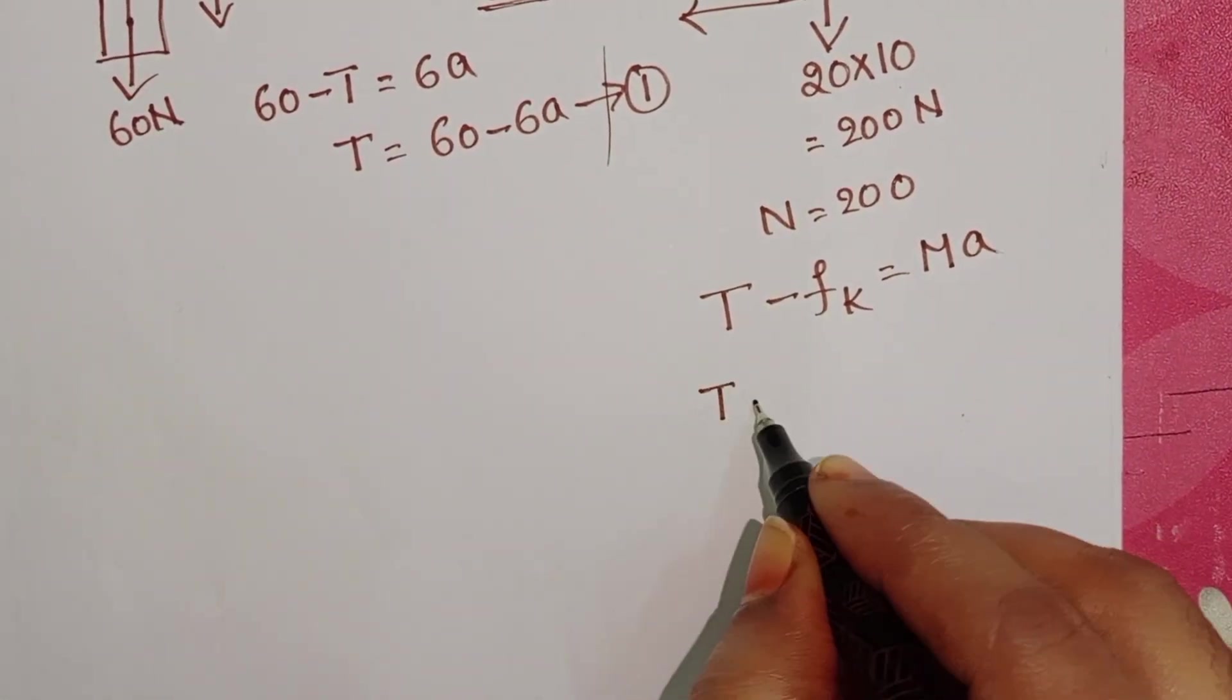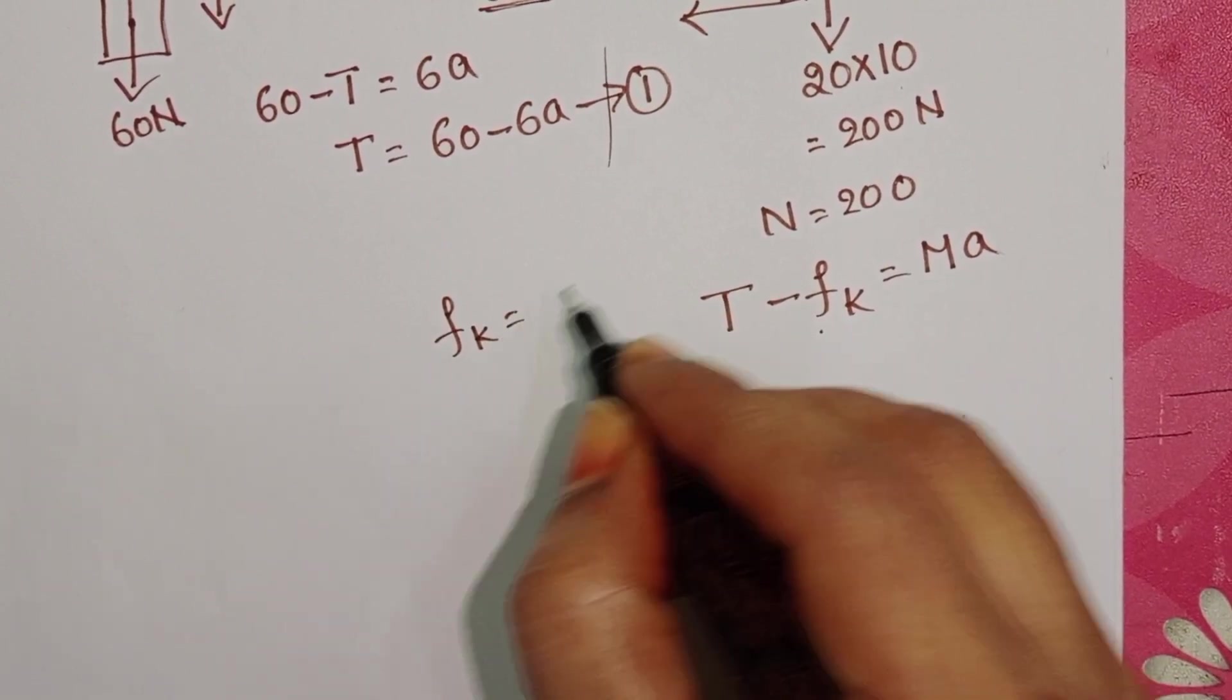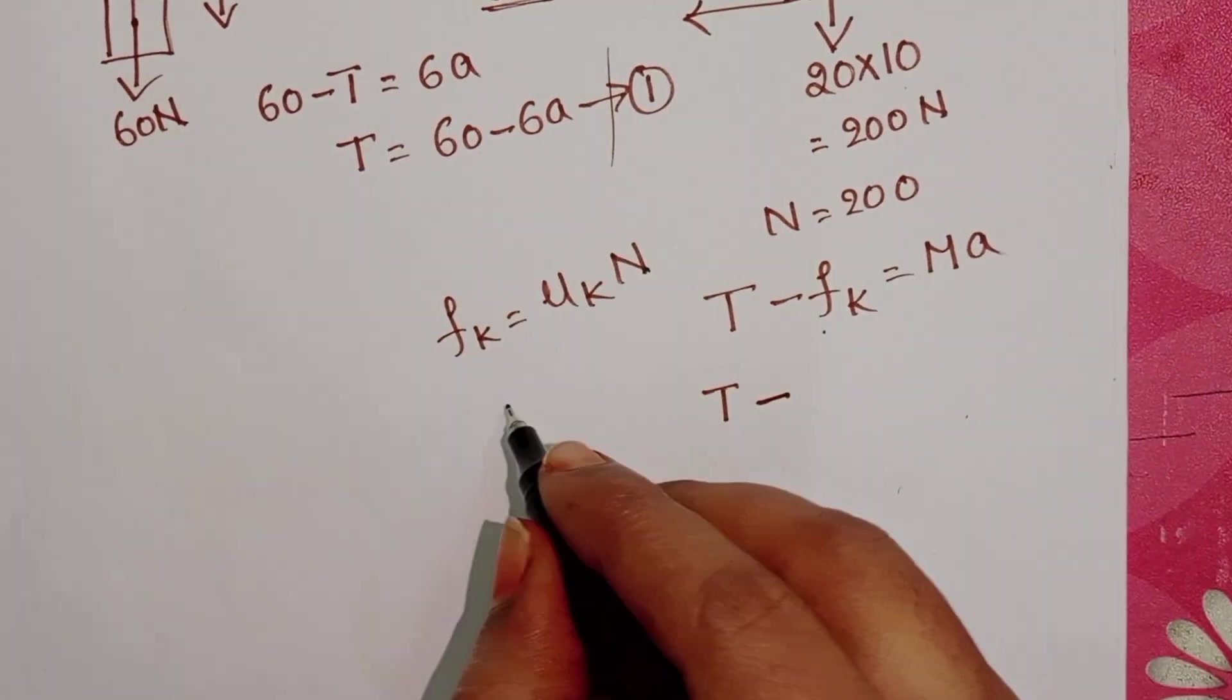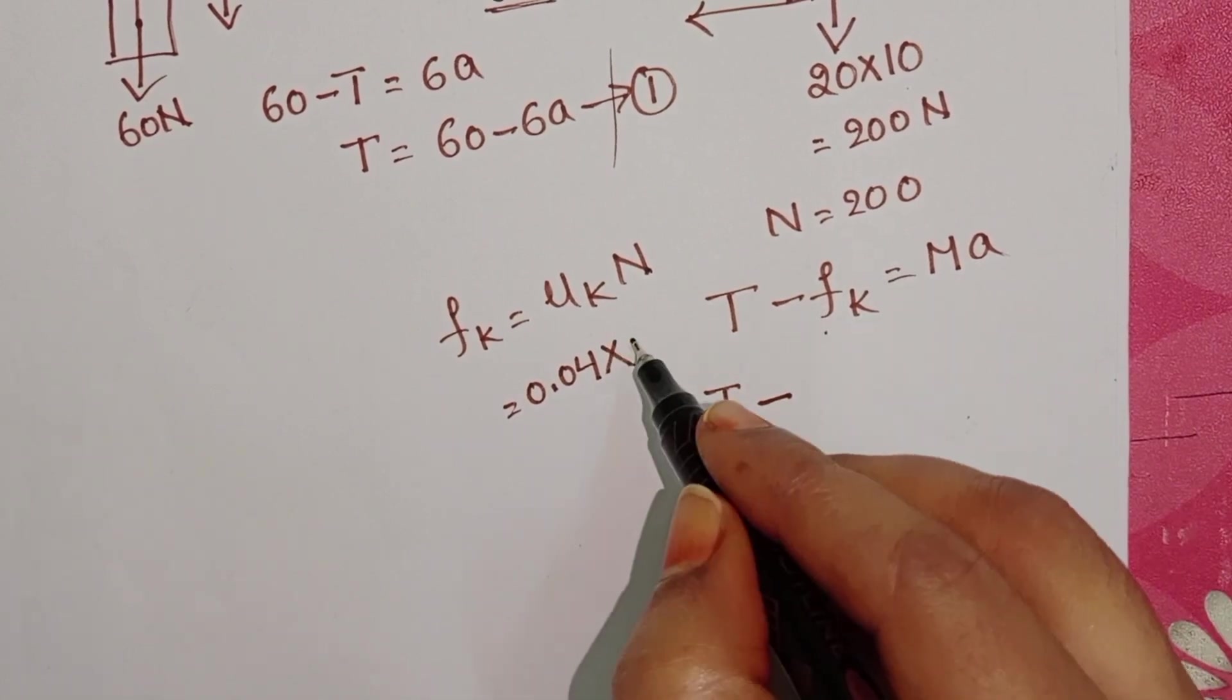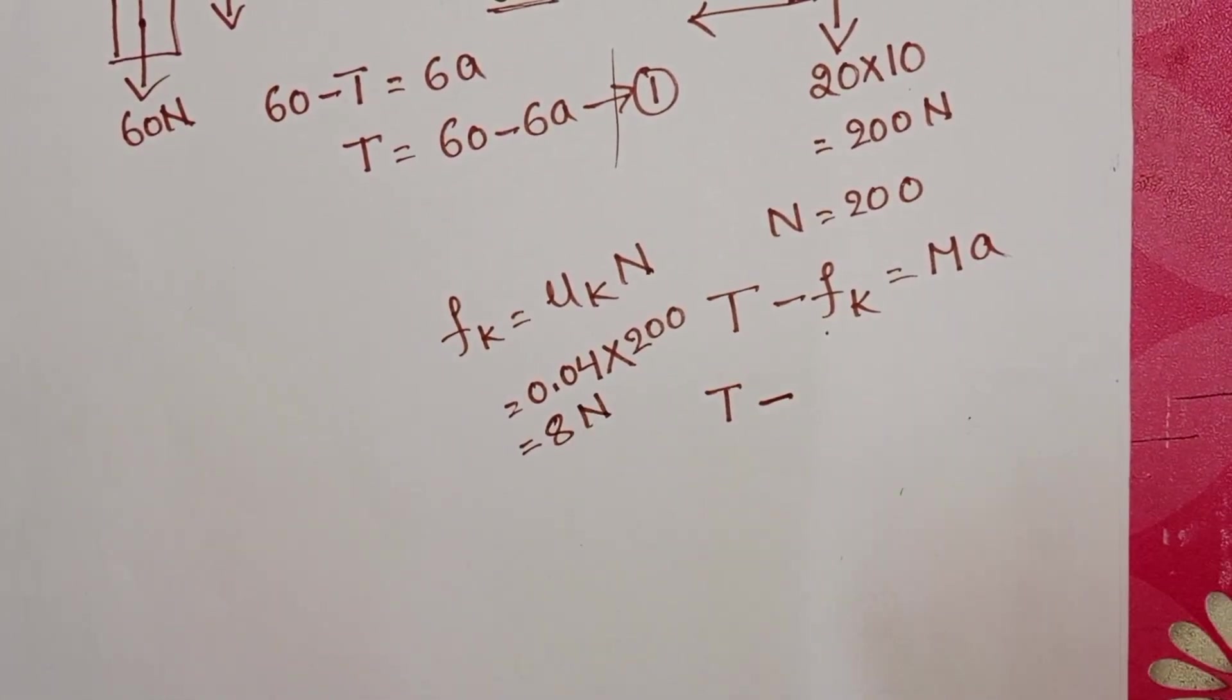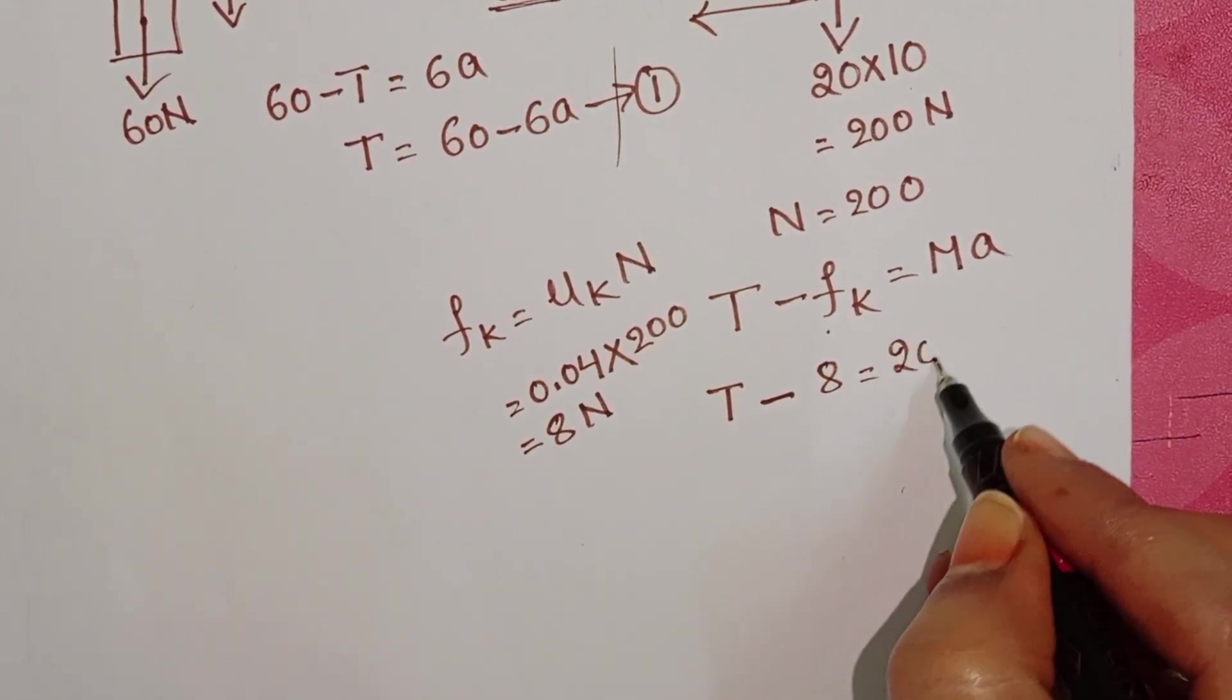T minus the frictional force. Here, friction formula is coefficient of friction times normal reaction. Given coefficient of kinetic friction is 0.04 times normal reaction is 200. This is 8 N. So T minus 8 equals 20A.